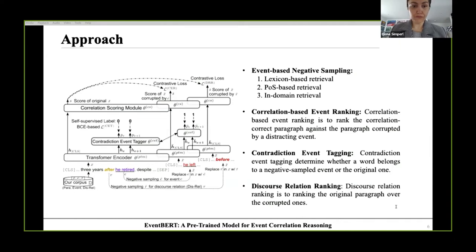To further explore event correlation information underlying paragraphs, it is promising to consider another kind of negative sampling from the perspective of discourse relation. That is, we can sample a couple of negative discourse relations to corrupt the paragraph, and then employ our model to distinguish them. To this end, we propose the third self-supervised contrastive learning objective, discourse relation ranking, with a very similar target with correlation-based event ranking, ranking the original paragraph over the corrupted ones. Thereby, we share learnable parameters in correlation-based event ranking with those in discourse relation ranking here to improve correlation-based ranking and enhance the correlation scoring module.